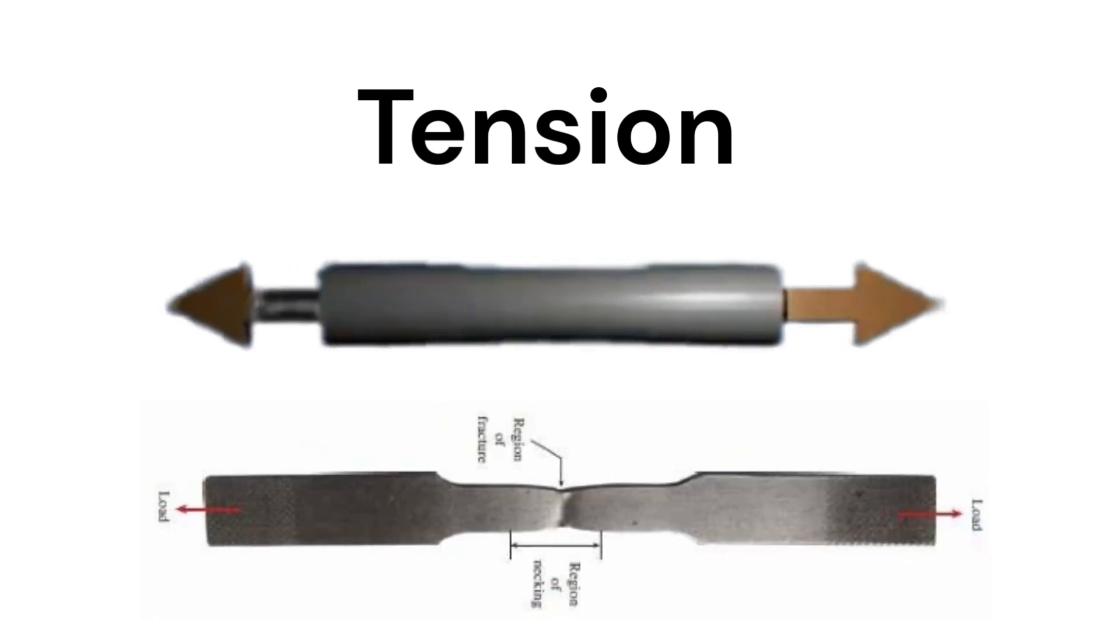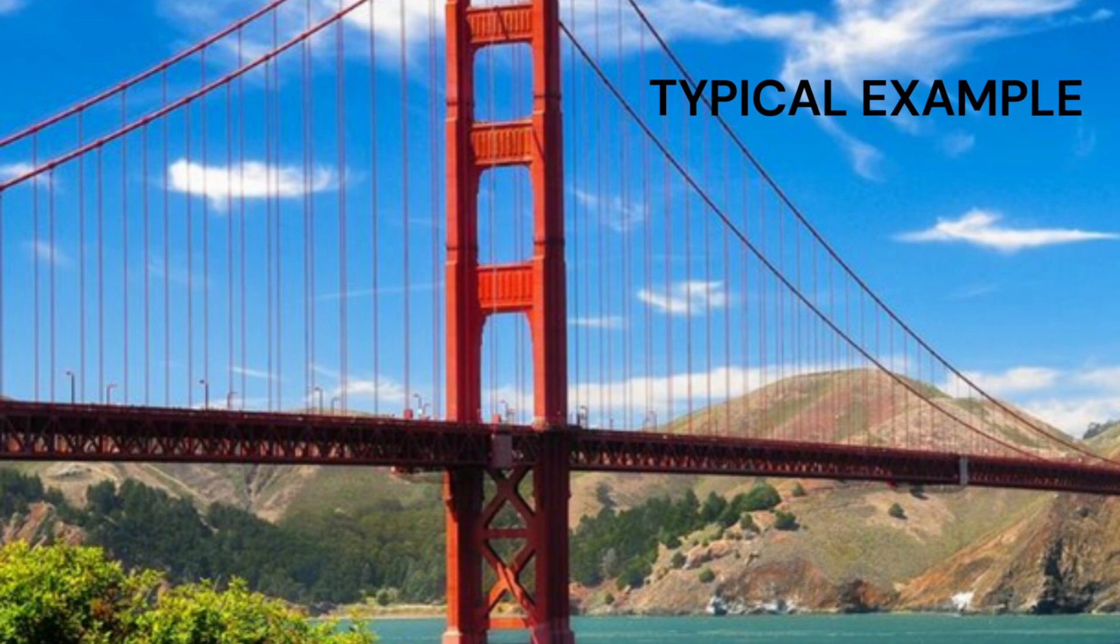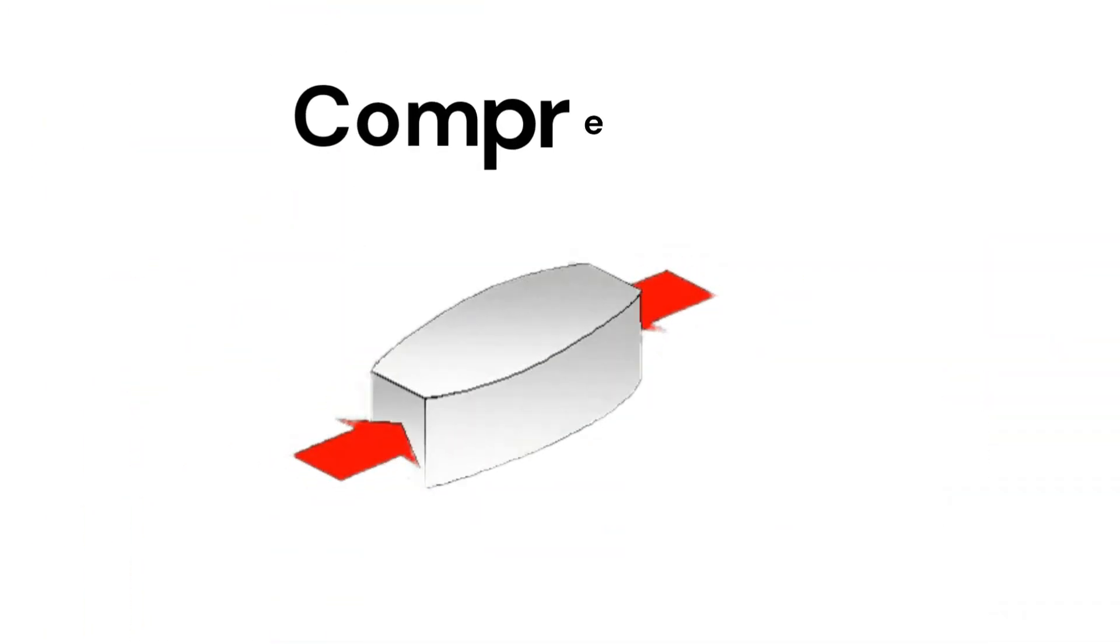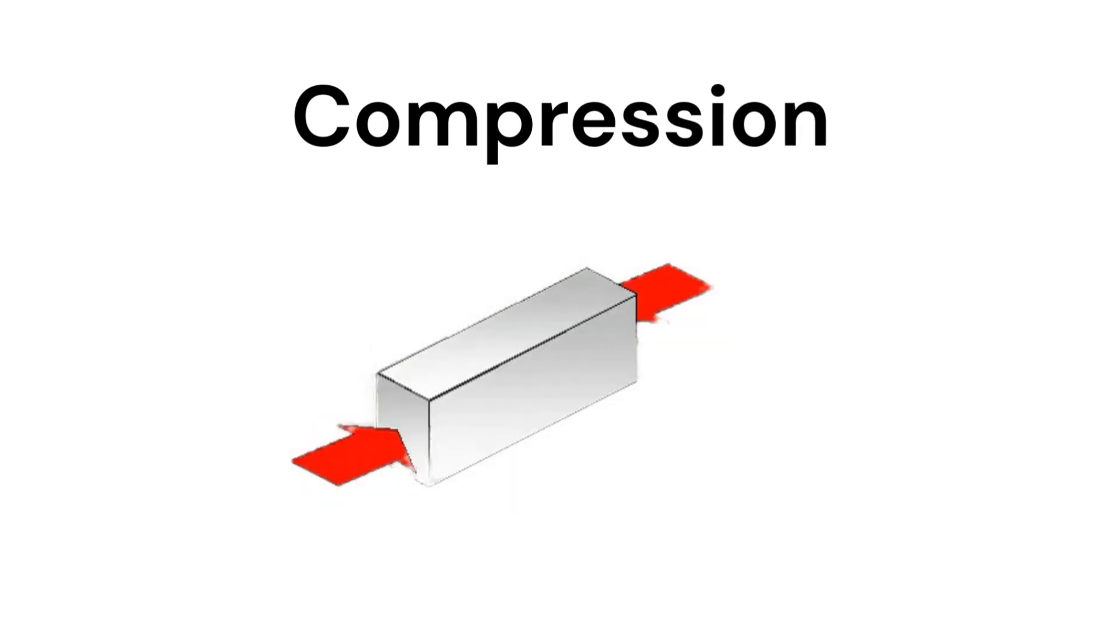A typical example is a suspension bridge where the cables are stretched due to the weight of the bridge. The cables are in tension. Compression, on the other hand, occurs when a member is being pushed.